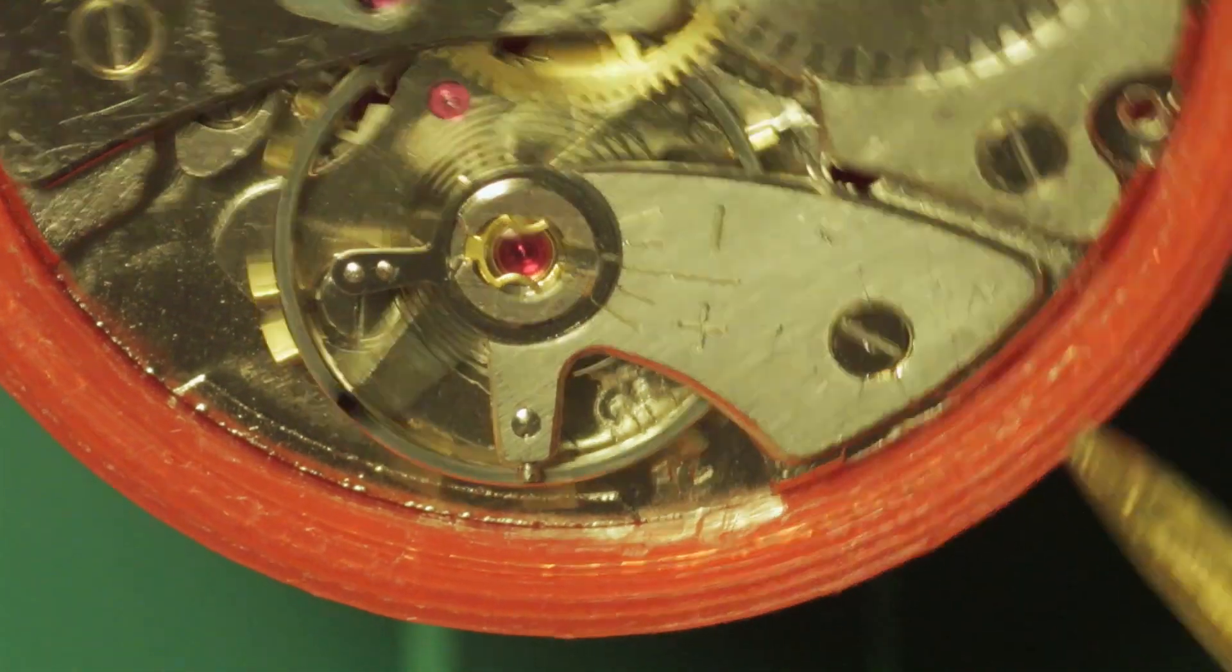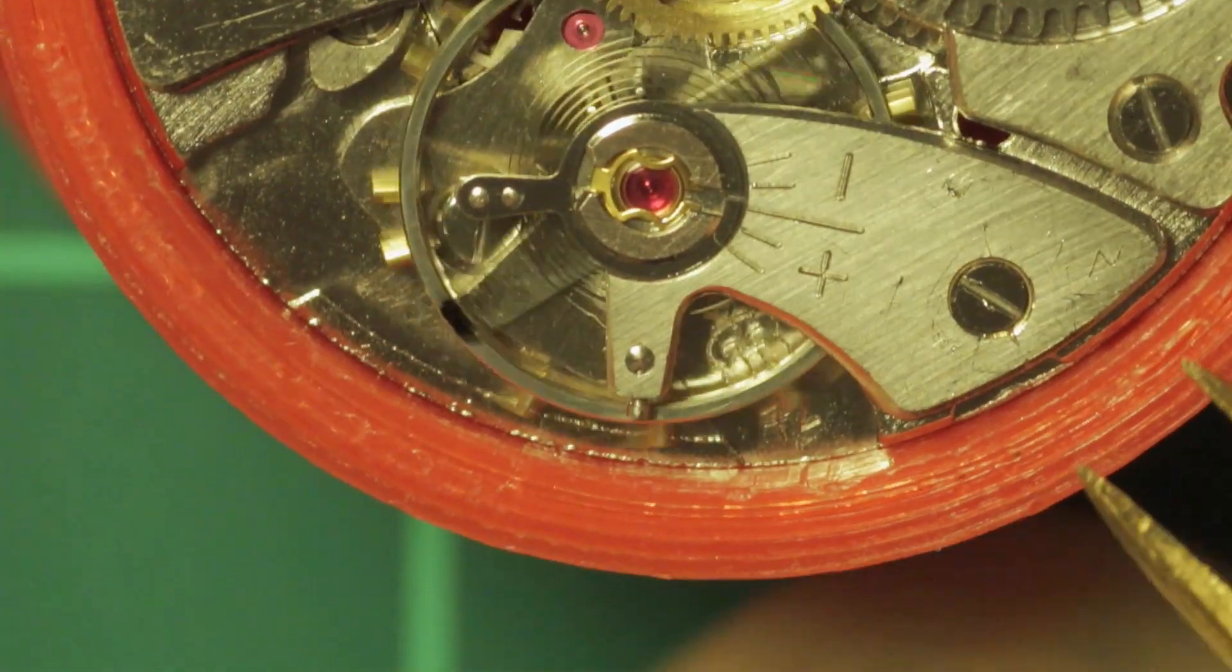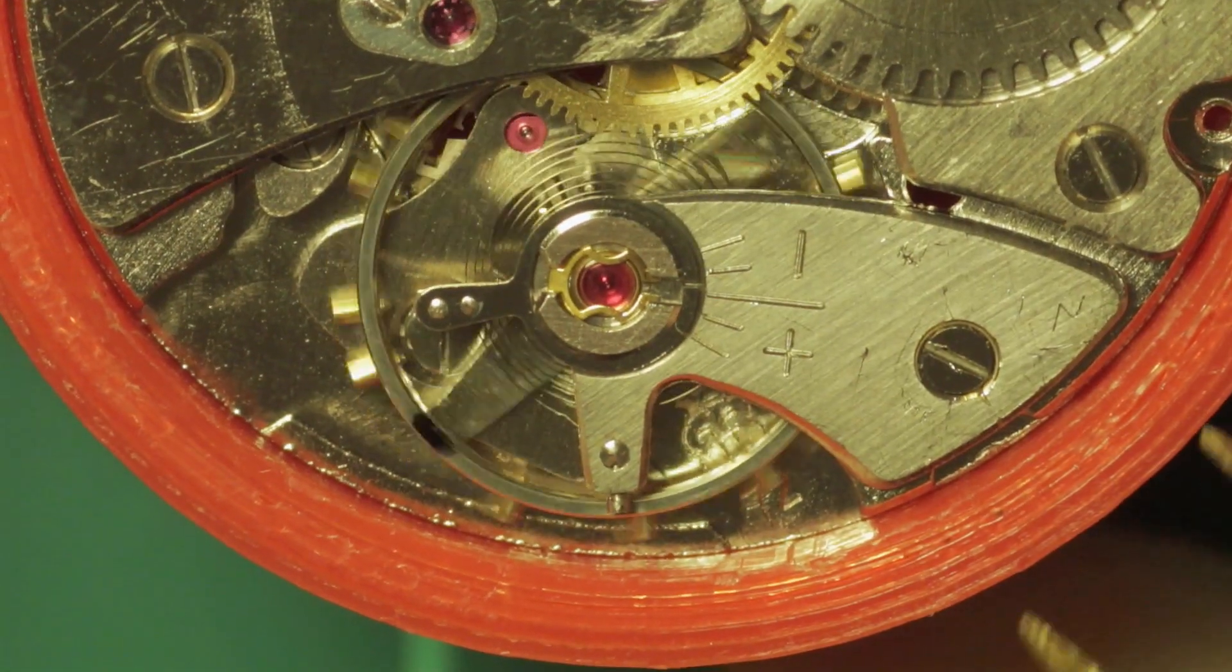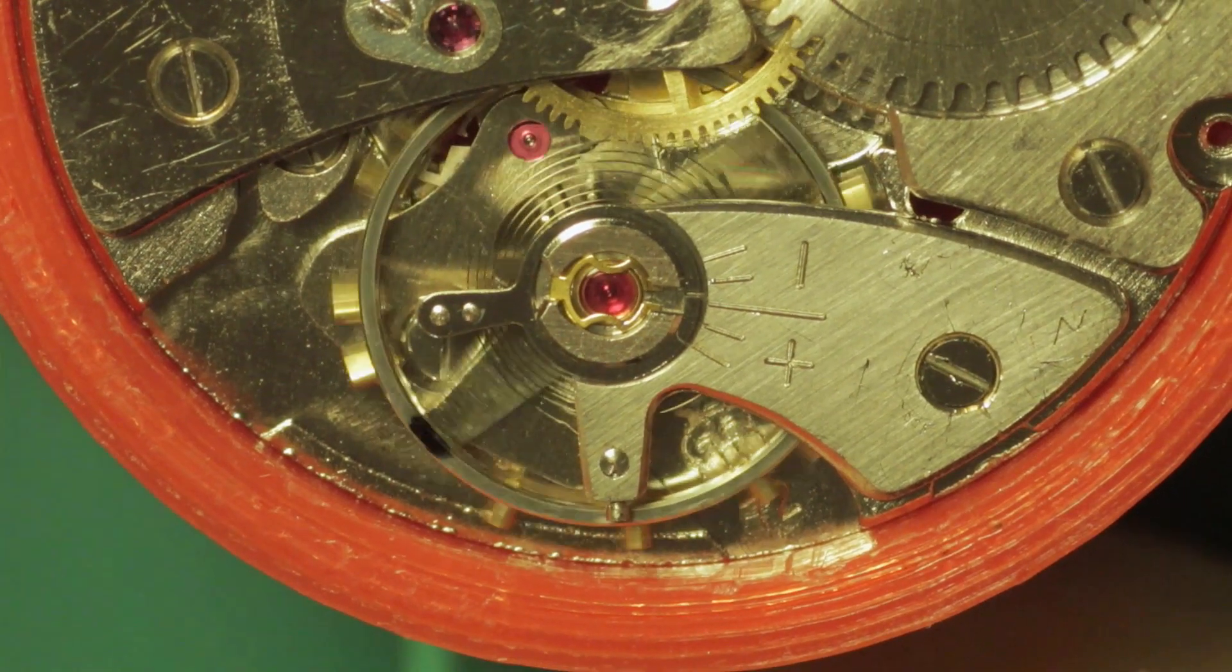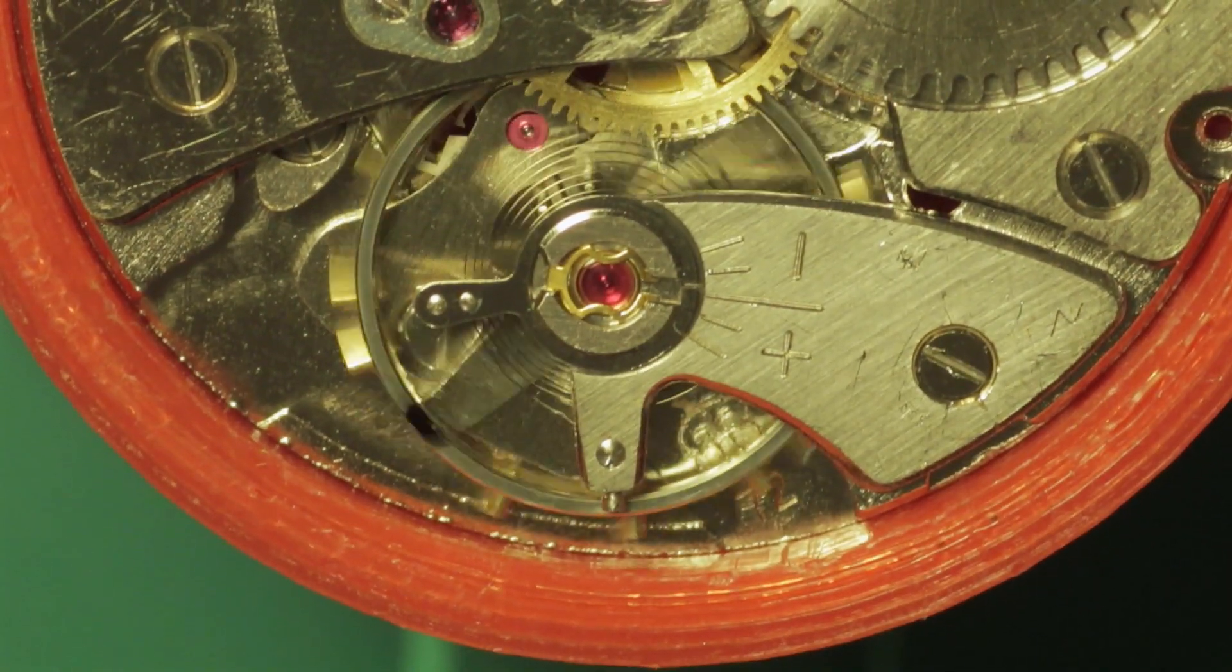Now ideally you want to do this winding and adding the power while it's sat on your timegrapher so that you're not disturbing it and causing it to swing more or less.